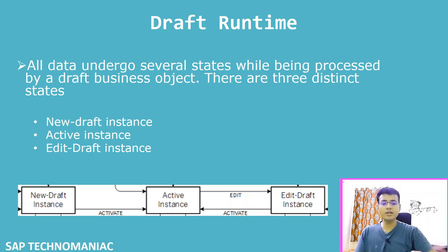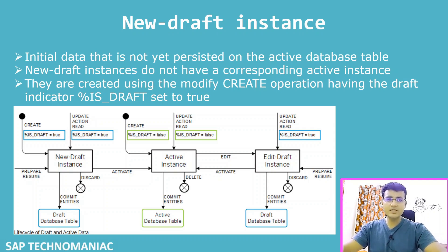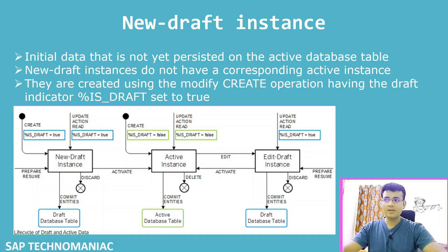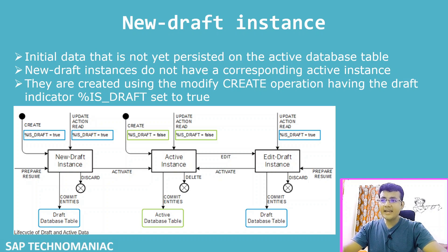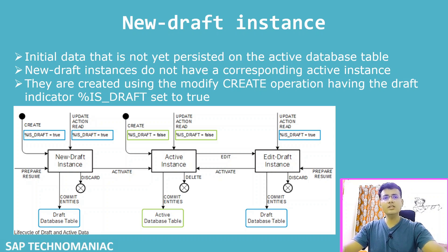The first state is the new draft instance, which is created when the data is not already available in the active database table. There are multiple ways to create a new draft instance. If you are working on UI, you click the create button, which automatically calls the create modify create operation in the back end. Alternatively, you can use the EML statement modify create operation in your code.